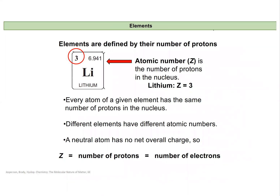The number of protons is the atomic number, which defines the element, and it will always be found on the periodic table as the only whole number listed for an element. The atomic number for lithium is 3. The other number on the periodic table, which usually has a decimal place, is the atomic mass — the average mass that an atom of that element might be. If we are not looking at an ion and the charge is zero, the number of protons and the number of electrons must be equal so the positive and negative charges cancel out.